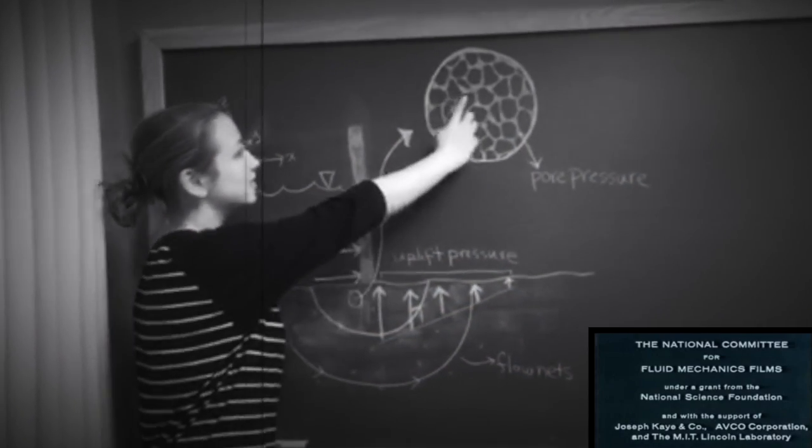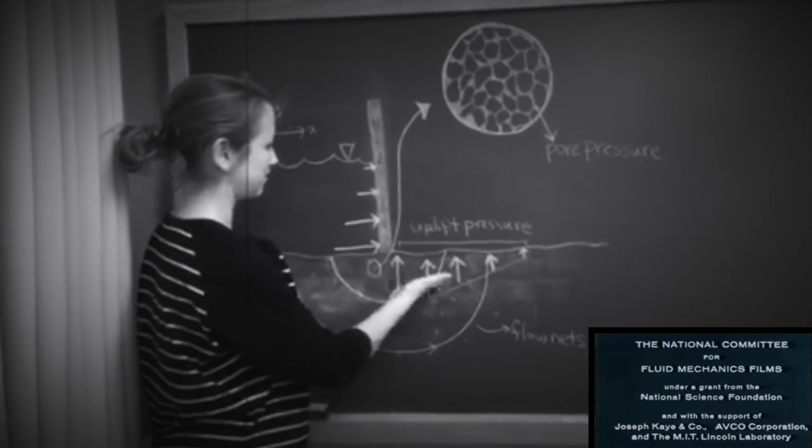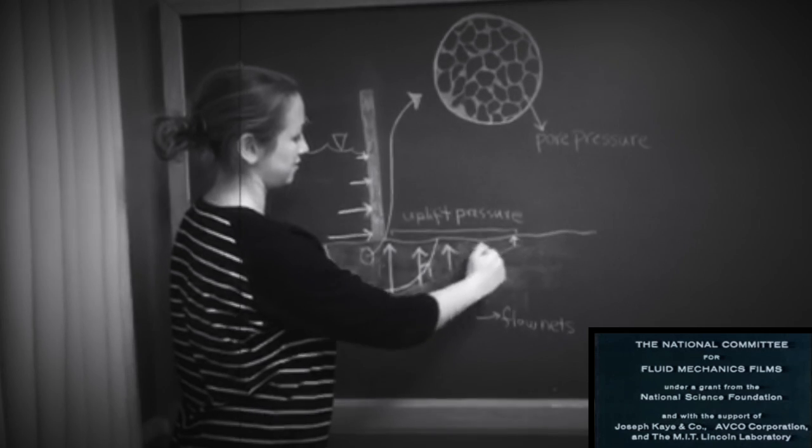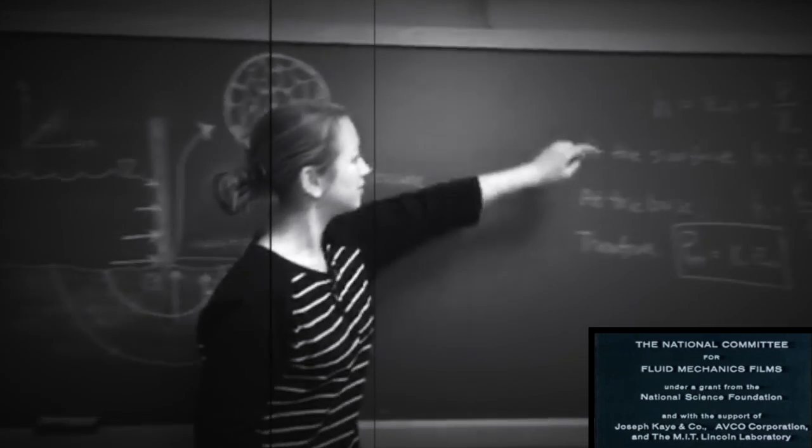At the base of a dam, water saturates the soil and reaches steady state groundwater flow. In this system, an uplift pressure is exerted within the soil, which decreases in magnitude with distance downstream.